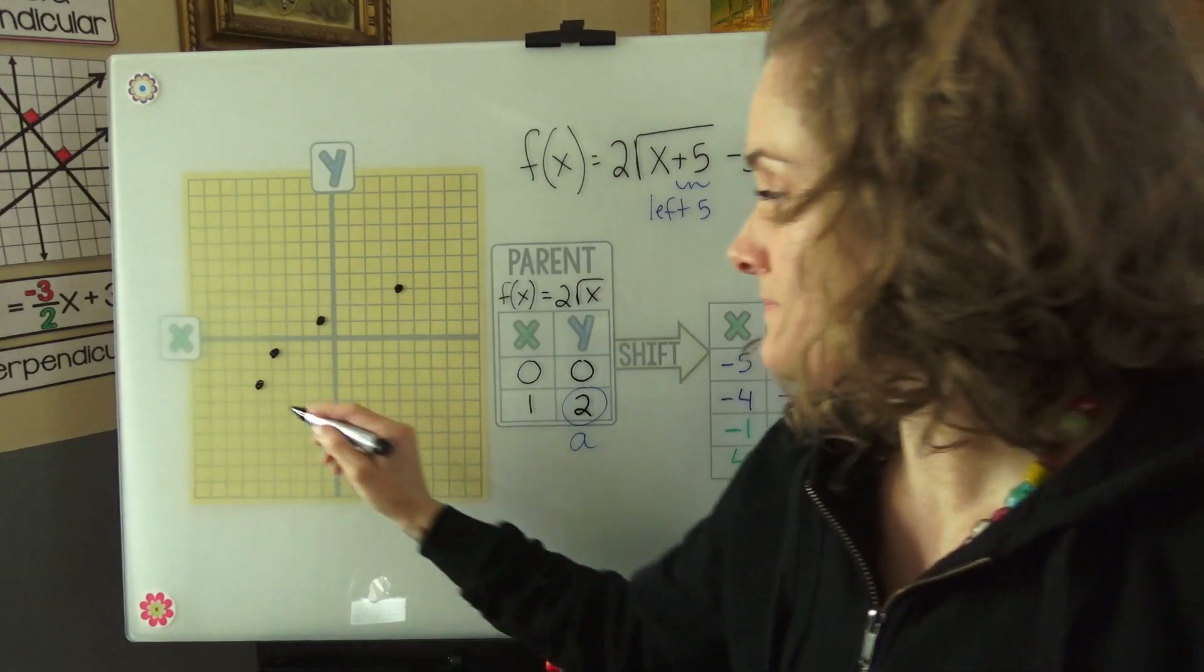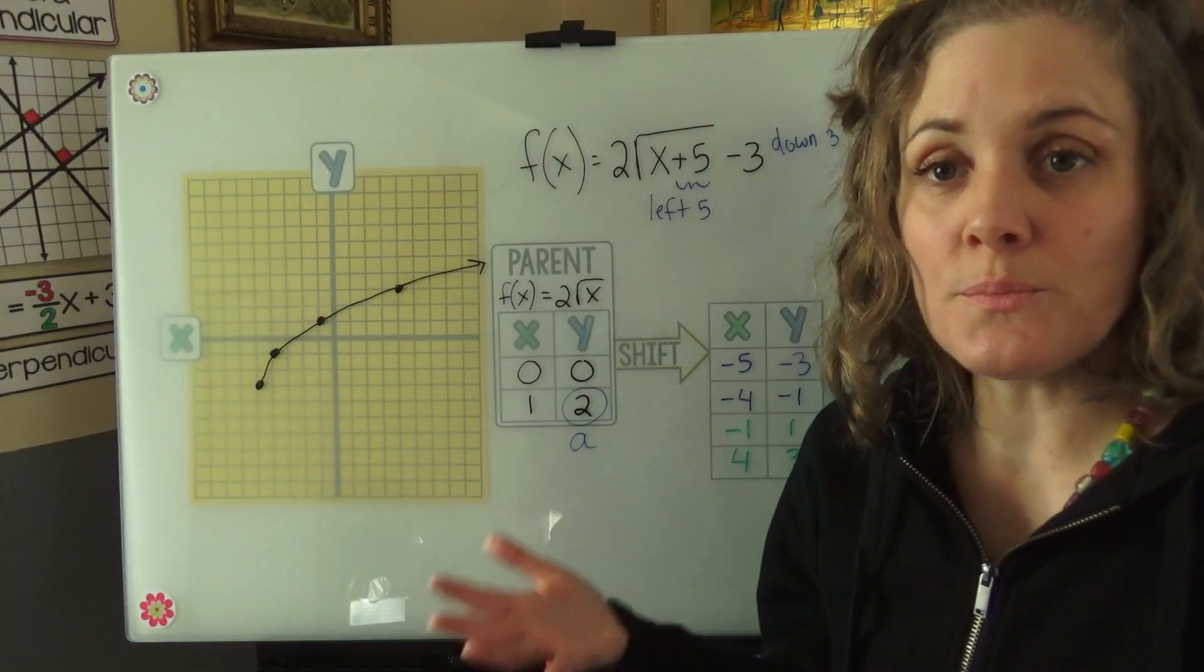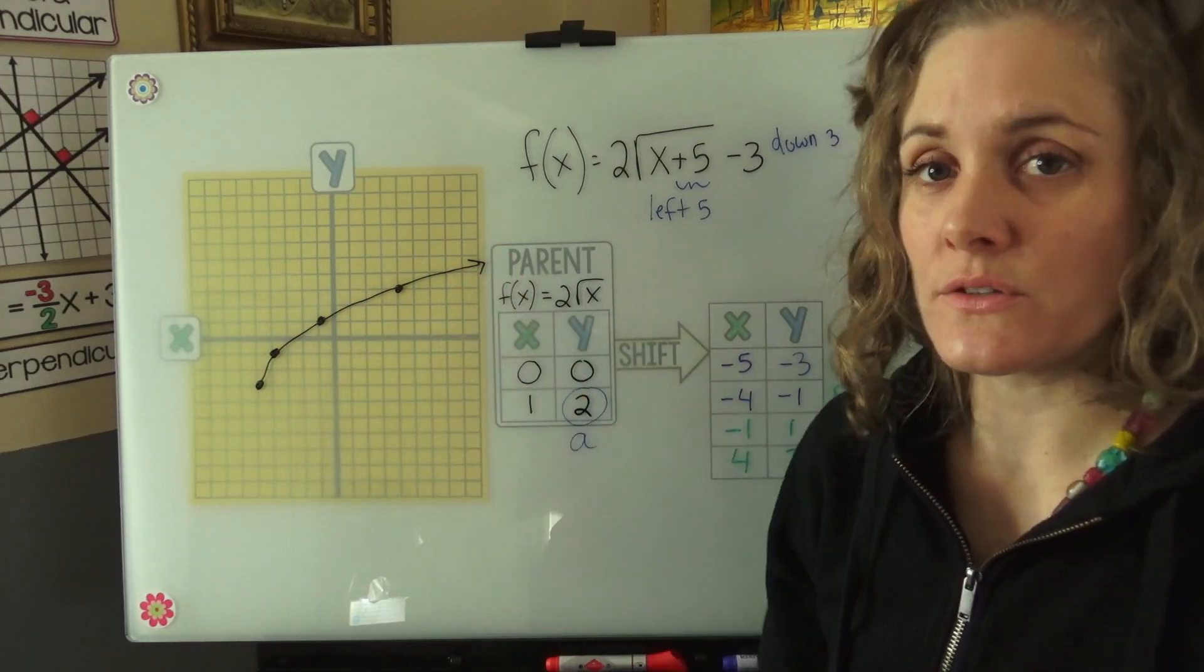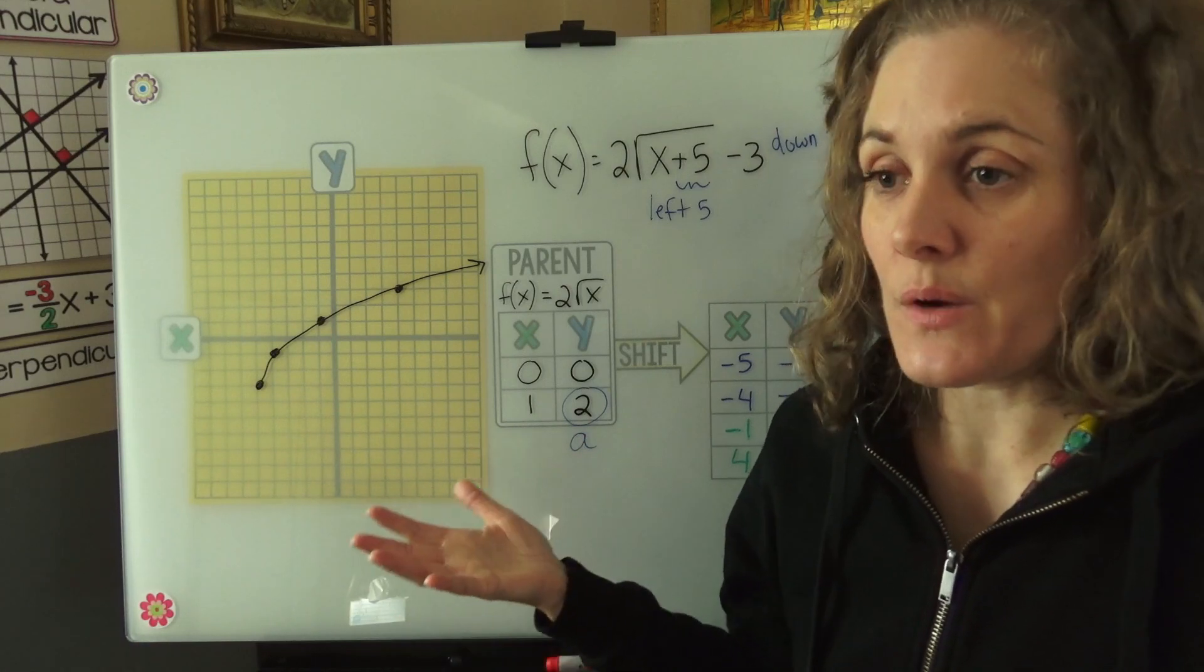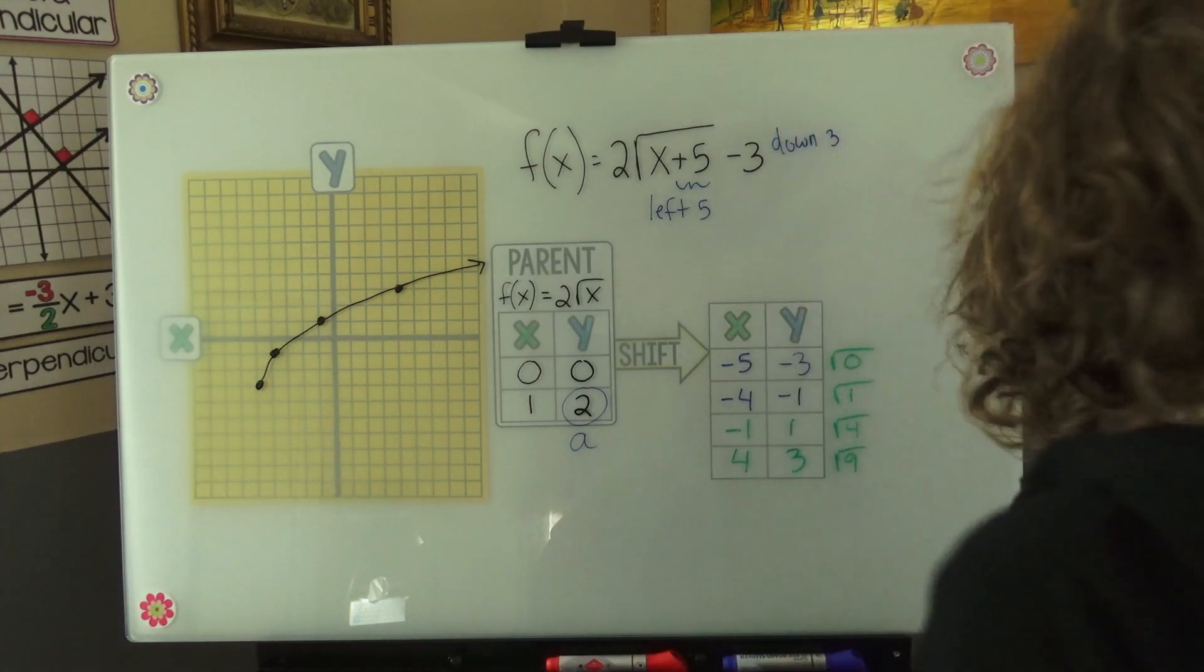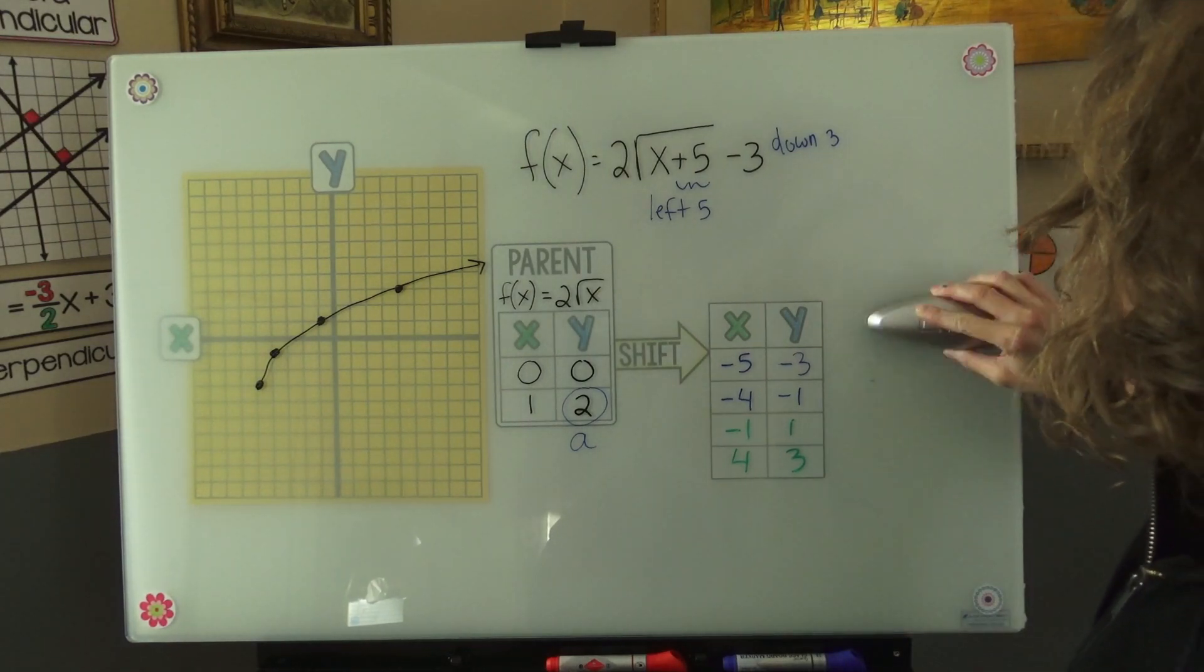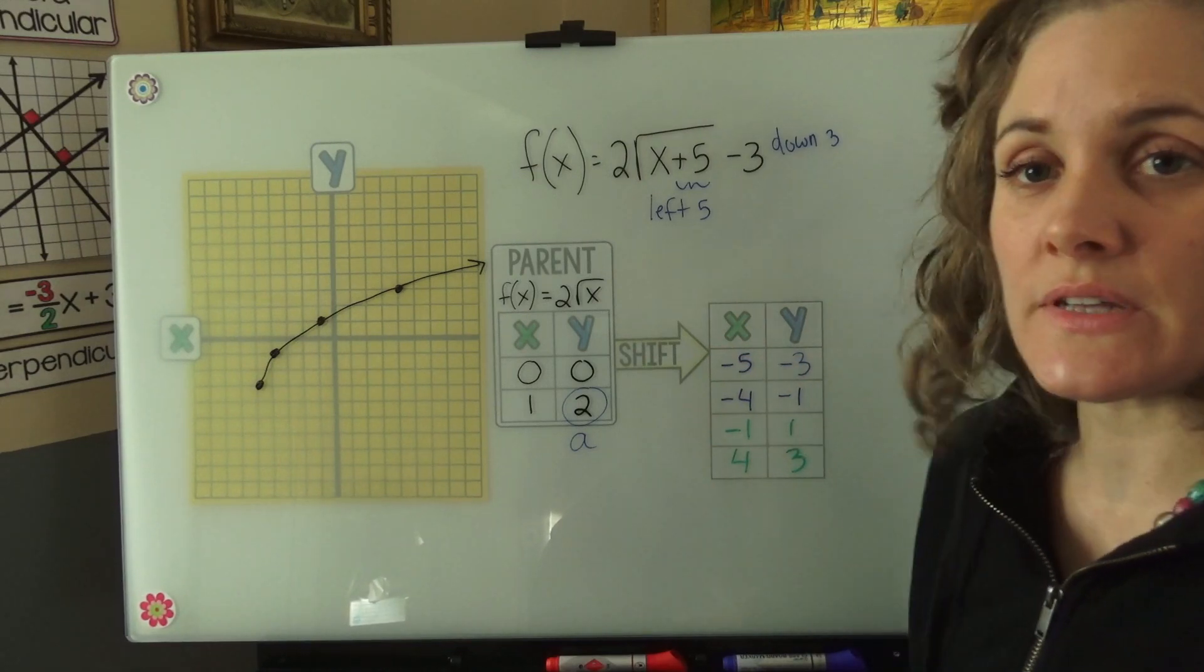And then we can connect. Now, there's a pretty cool pattern that forms when you're graphing radicals. And it's kind of a shortcut, but I wanted to show you anyway, and you can make the choice whether to use it or not. So I'm going to erase this.